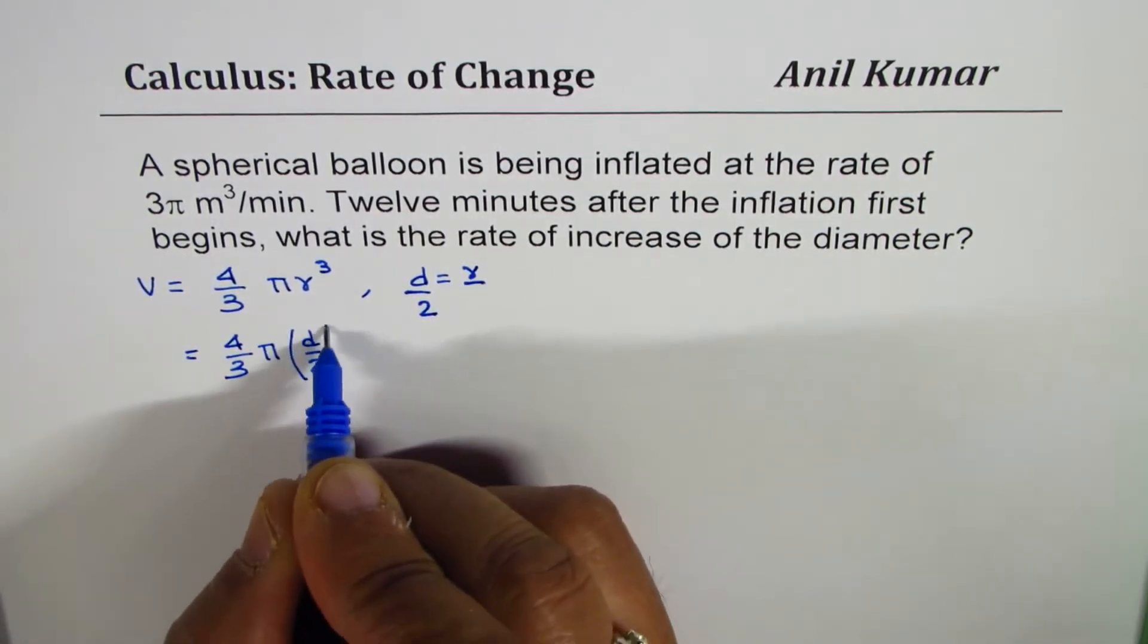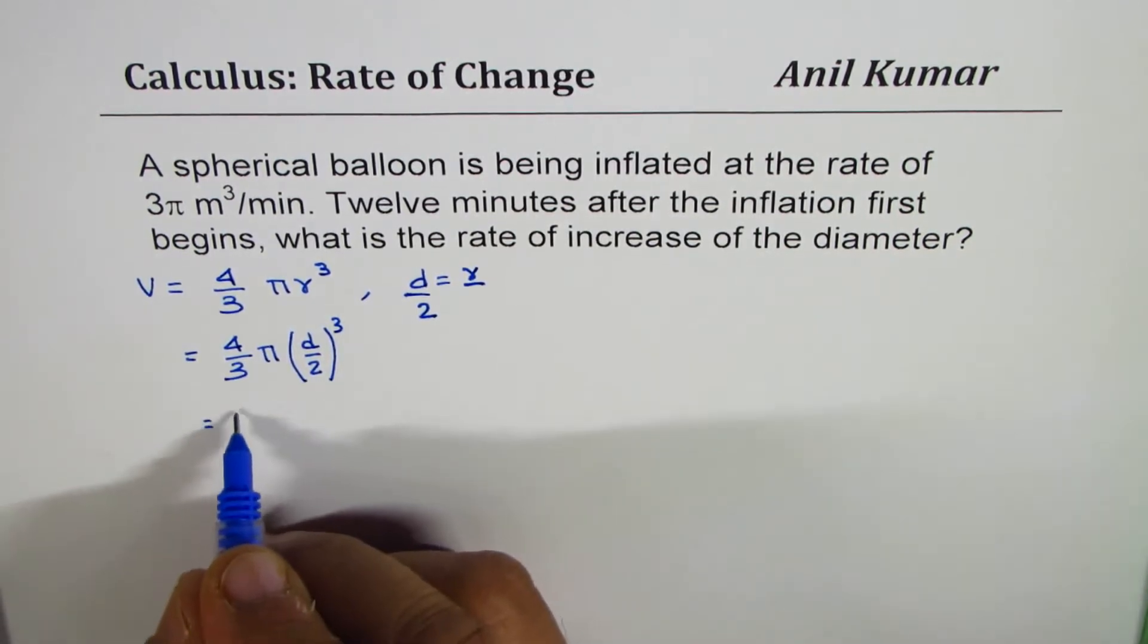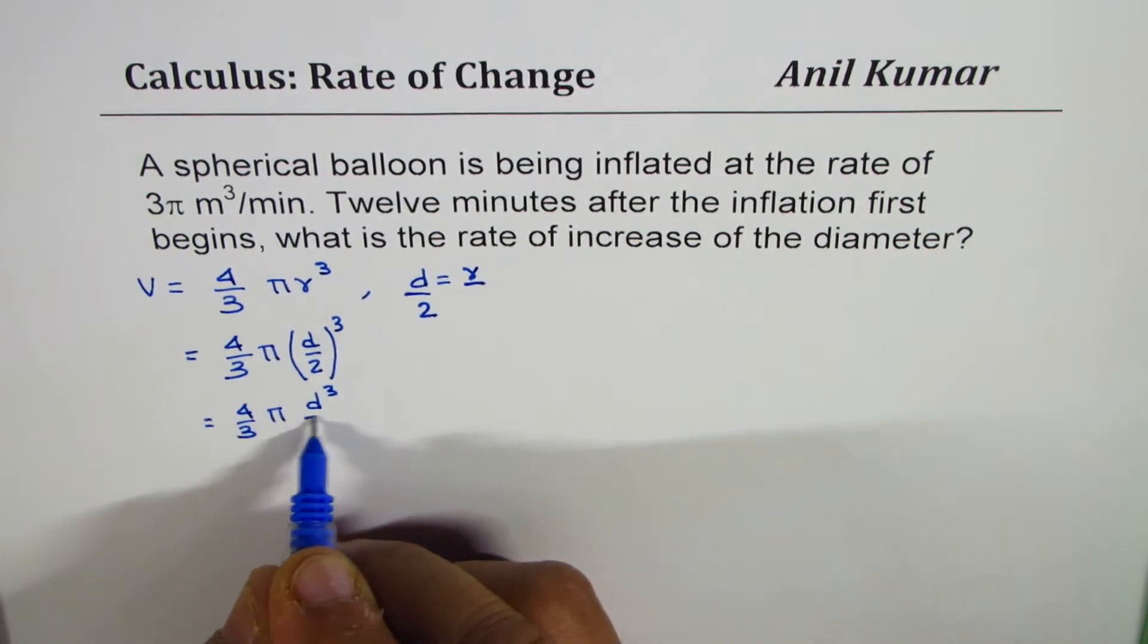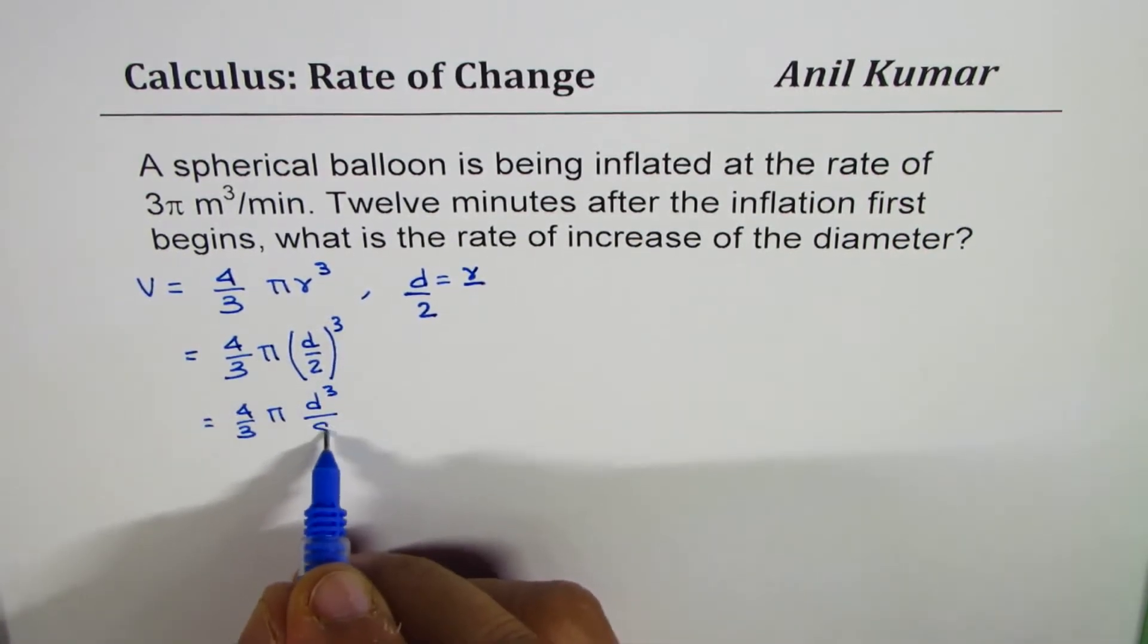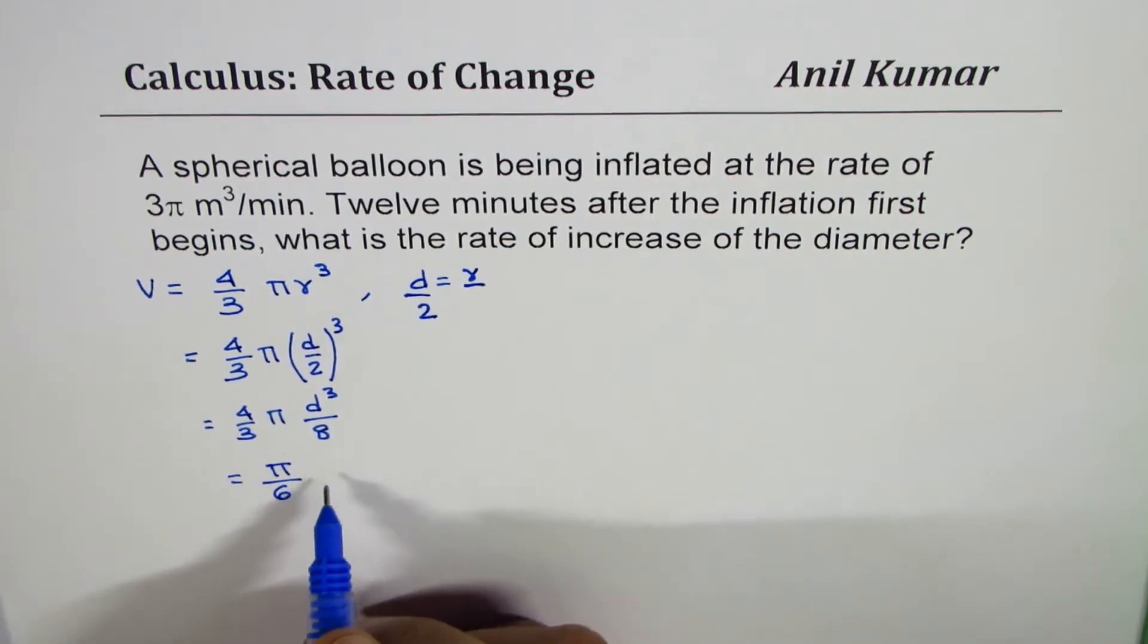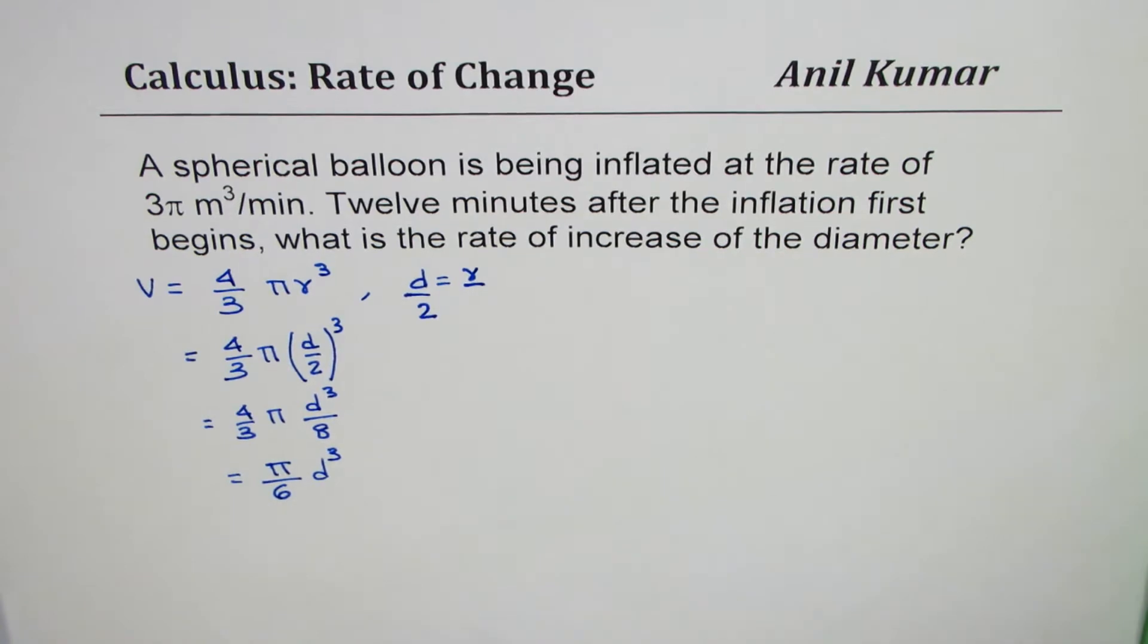That gives you 4/3 π d³/8, where 2³ is 8. 4 goes 2 times with 8, so we get π/2 times 3 is 6, so π/6 d³. We have derived a formula where volume is now related with diameter: V = π/6 d³.